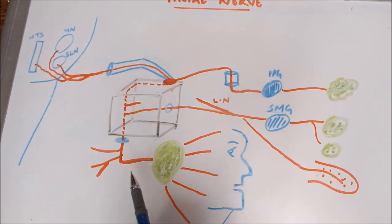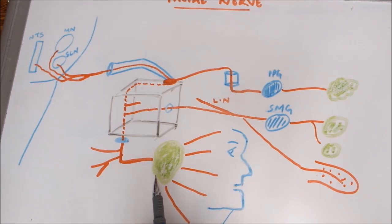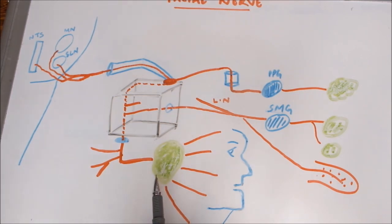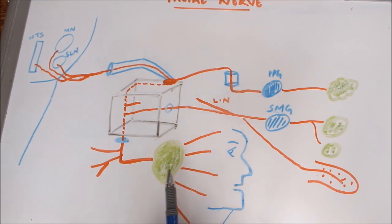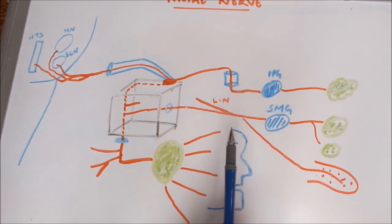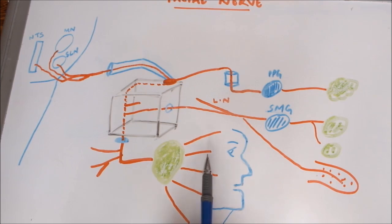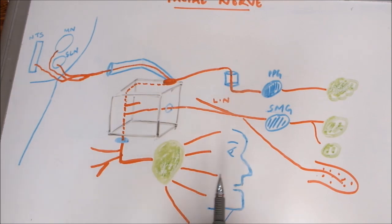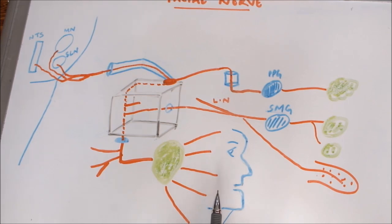The main trunk of the facial nerve then moves forward and enters the substance of the parotid gland, where it lies between the superficial and deep parts of the parotid gland. Here the facial nerve divides into its five main branches: the temporal, zygomatic, buccal, mandibular, and cervical branches. These branches supply the muscles of facial expression, and hence the course terminates here.